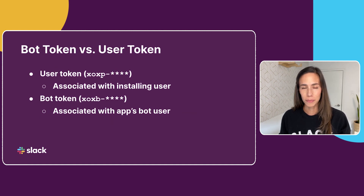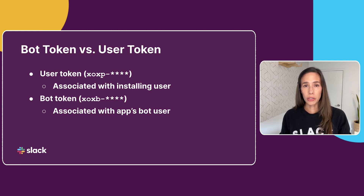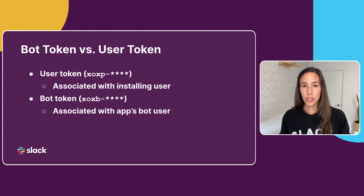This brings me to my last point. Before even requesting scopes, make sure you really understand the difference between a bot token and a user token. The Slack API uses a granular bot permissions model which centers around the bot token. The bot token should generally always be used unless very specific functionality can only be achieved via the user token. So before assigning scopes to the user token, make sure you've tested it out with the bot token first and can strongly justify the use of a user token scope. For more information about the granular bot permission model and the general differences between the user token and the bot token, make sure you watch the video linked below.